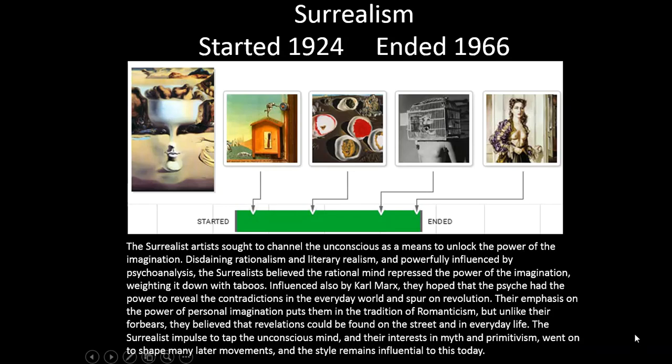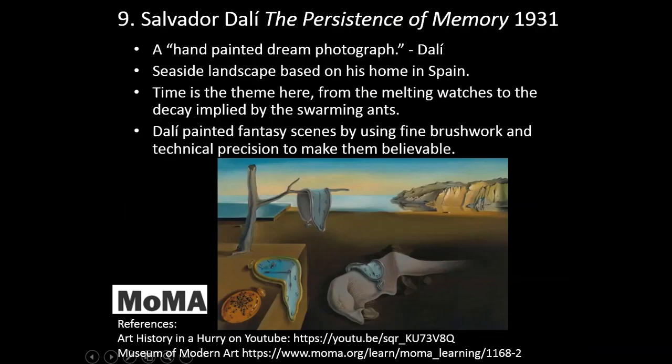Number nine — Salvador Dalí, The Persistence of Memory, 1931. A hand-painted dream photograph — that is how Dalí described his works. The seaside landscape is based on his home in Spain. Time is the theme here, from the melting watches to the decay implied by the swarming ants on one of the watches. Dalí painted fantasy scenes using fine brushwork and technical precision to make them believable, spending a lot of time giving them a realistic style.